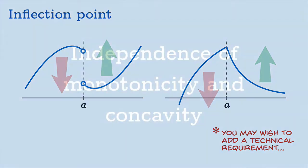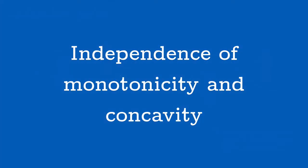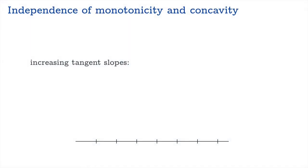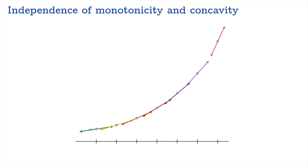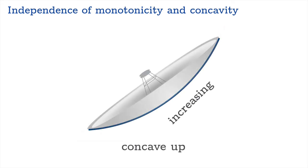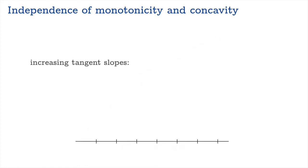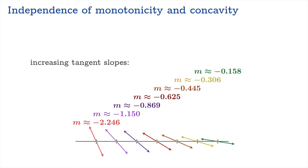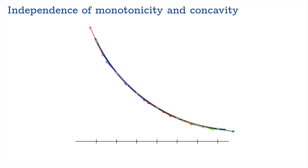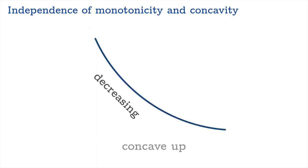One final thought: monotonicity and concavity are independent notions. Suppose you had a graph where the tangent slopes were positive and increasing — you'd see an increasing graph that is concave up. You could also have negative tangent slopes that are increasing — that gives a decreasing graph which is concave up.